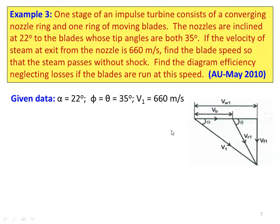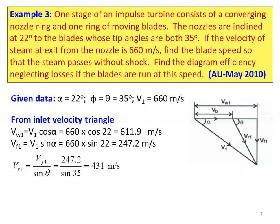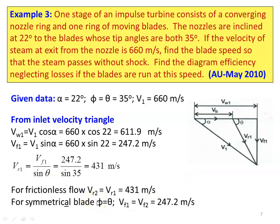Given data: nozzle angle alpha equals 22 degrees, moving blade inlet angle equals exit angle equals 35 degrees, steam speed V1 equals 660 meters per second. From the inlet velocity triangle: VW1 equals 660 cos 22 equals 611.9 m/s, VF1 equals 660 sin 22 equals 247.2 m/s. VR1 equals VF1 divided by sin theta equals 247.2 divided by sin 35, equal to 431 meters per second. Since frictionless flow with equal angles, VF1 equals VF2 equals 247.2 meters per second.